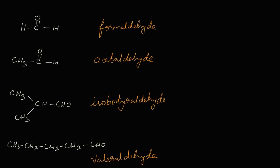In the IUPAC name, first we count the carbon atoms. The first structure has only one carbon, so the base is methane. We remove the 'e' and identify the functional group — CHO, which is aldehyde — so we add the suffix AL. The IUPAC name of formaldehyde is methanal.